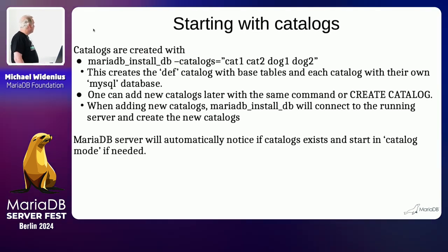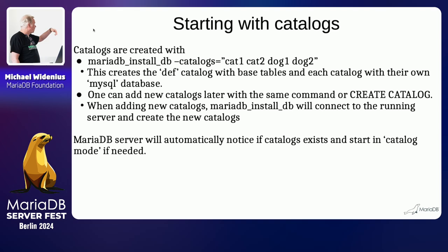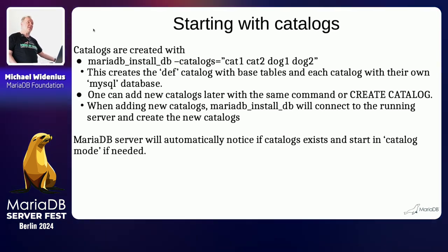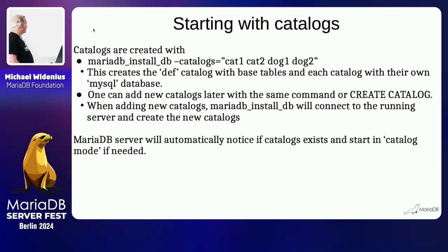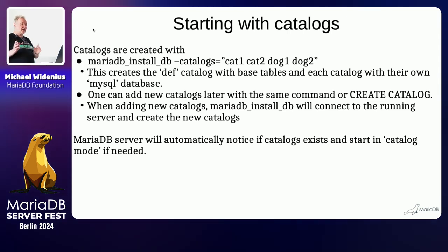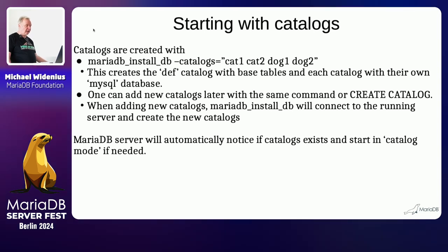To start with catalogs: normally you run mariadb-install-db to set up MariaDB. Now you have a new option where you can say --catalogs and list all the catalogs you want. Everything is created at startup and the server will notice and run in catalog mode. You can add new catalogs later by running mariadb-install again and listing the new catalogs — they will be added — or you can use the CREATE CATALOG command within the server. All commands are inside the server with no outside calls.